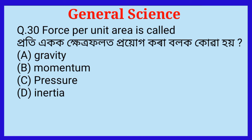Question number thirty: Force per unit area — what is this called? The answer is option C, pressure.